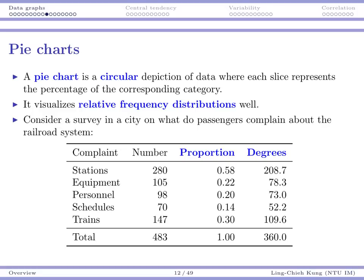Another very popular data graph is the pie chart. The pie chart is a circular depiction of data in which each slice represents the percentage of the corresponding category. You have multiple categories, and for each category you have a number of data points. The slice becomes larger as the number of data points increases, so the area of each slice represents the proportion of that category among the whole dataset.